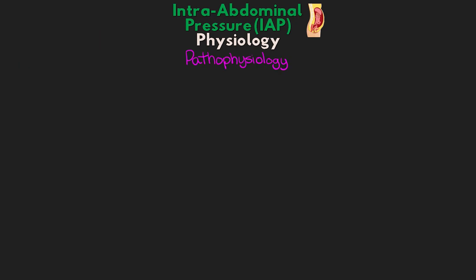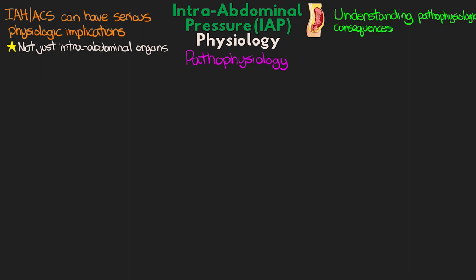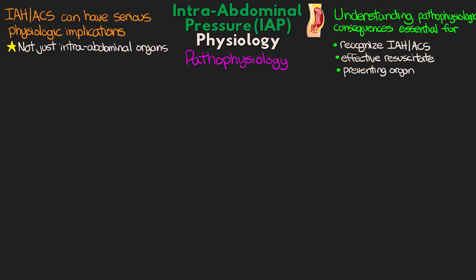Intra-abdominal hypertension and abdominal compartment syndrome have very serious physiologic implications, and they're not just limited to intra-abdominal organs. Elevations in intra-abdominal pressure can lead to significant impairments of cardiac, pulmonary, renal, GI, hepatic, and central nervous system functioning. Patients who have prolonged, untreated IAH commonly present with inadequate perfusion and end-organ failure. Understanding these pathophysiologic consequences is essential for recognizing IAH or ACS, effectively resuscitating these patients, and preventing the development of pressure-induced organ dysfunction or failure.